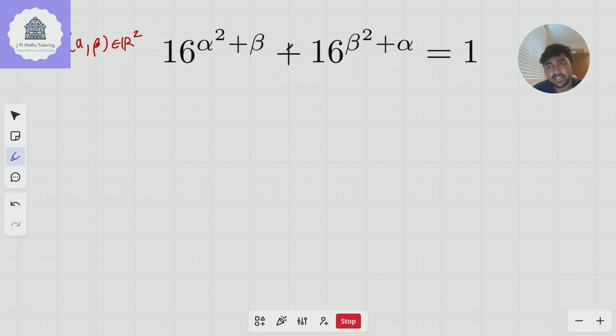Notice that this equation is very symmetric in terms of alpha and beta. In other words, if I was to swap the roles of alpha and beta, this equation would stay the same. Formally, if I call this function f(α,β) = 16^(α²+β) + 16^(β²+α) - 1, so essentially we're looking for the roots of f, then f(α,β) is the same as f(β,α).